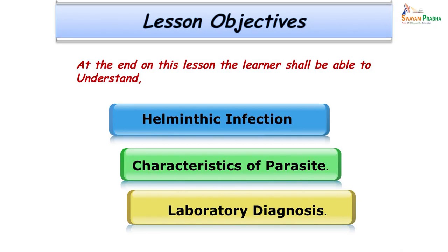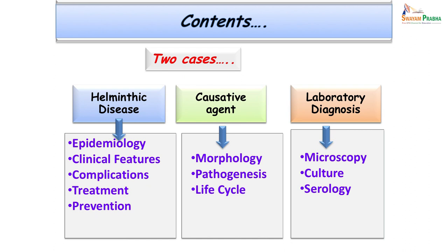The objectives of today's class are that at the end of the lesson, we will all be able to understand what this particular helminthic infection is, what the characters of the parasite causing this infection are, and its laboratory diagnosis. To meet the objectives, we are going to discuss the following headings: the helminthic disease, its prevalence, clinical features, complications, treatment, prevention, details of the parasite, and its laboratory diagnosis.